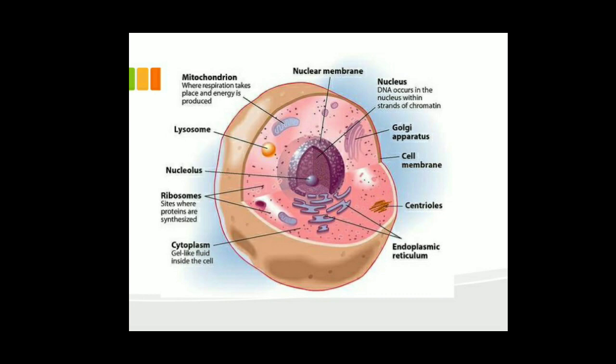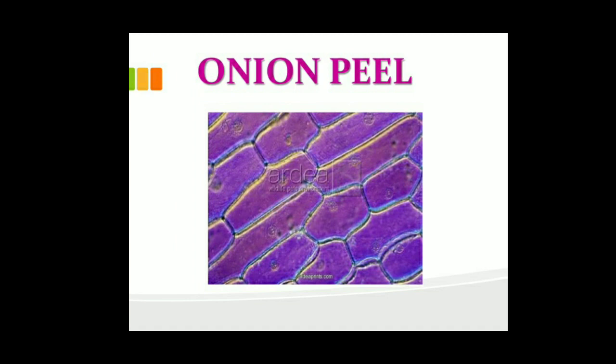This is a slide of onion peel. When school reopens, we will prepare this slide. You can see the color of the slide appears purple, but it will not actually look purple — because while preparing a temporary mount of onion peel, we use a chemical stain called safranine stain, and safranine stain is pinkish in color, so the slide will look somewhat pinkish.